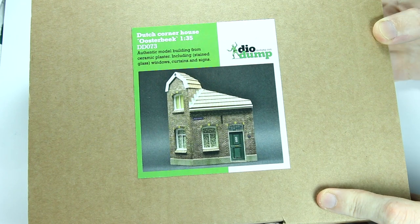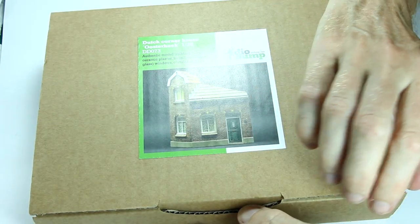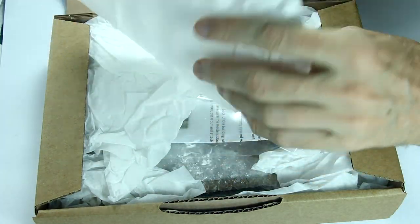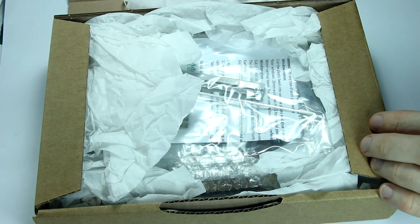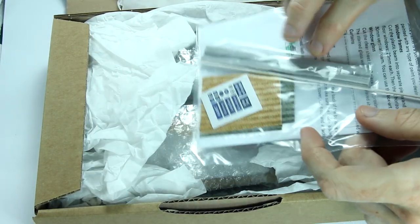This is a ceramic cast house and I haven't actually looked inside the box yet, so let's see what's inside. The whole thing is really well packaged. All the individual pieces are wrapped in bubble wrap, which is really useful because obviously they're ceramic so they're a little bit fragile.